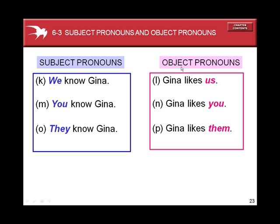Object pronouns receive the action of the verb. Gina likes us — that's myself plus someone else, Plural. Gina likes you. You can be singular or plural, Second Person. And Gina likes them, Third Person Plural.